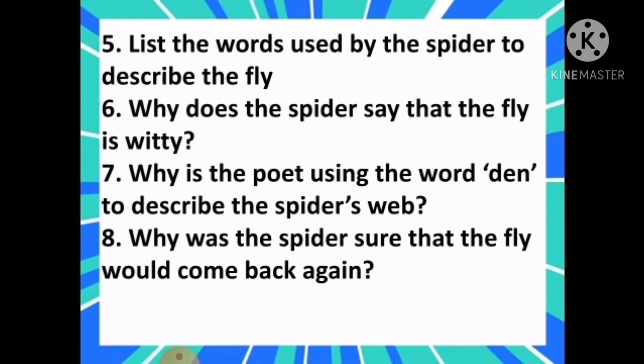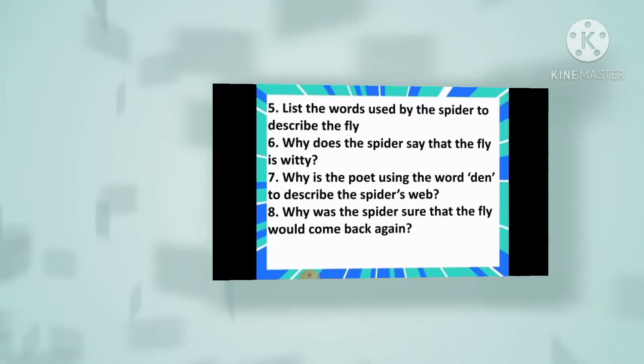Number 6: Why does the spider say that the fly is witty? Number 7: Why is the poet using the word 'den' to describe the spider's web? Question number 8: Why was the spider sure that the fly would come back again?